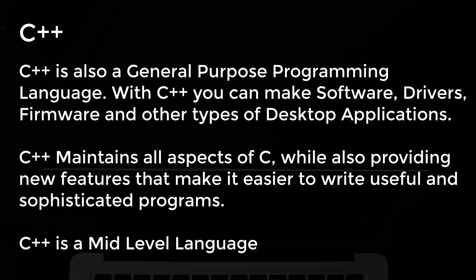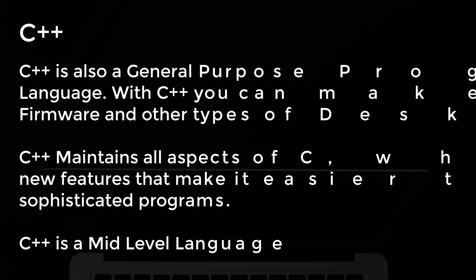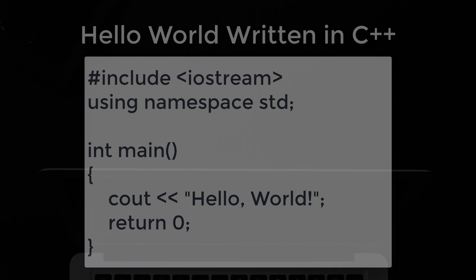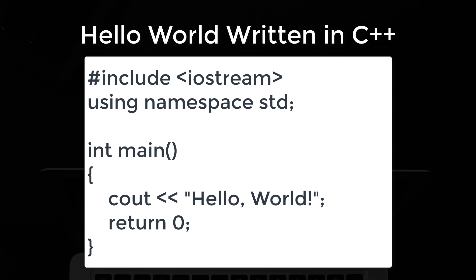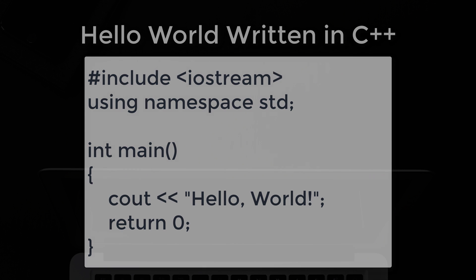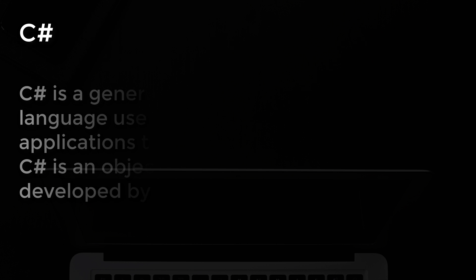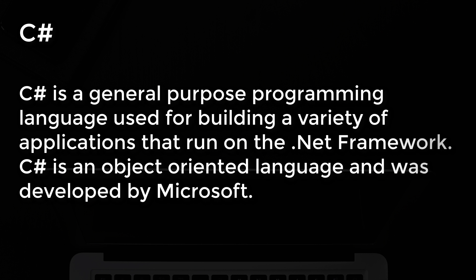Number 6: C++. C++ is also a general-purpose programming language. With C++ you can make software drivers, firmware, and other types of desktop applications. C++ maintains all aspects of C while also providing new features that make it easier to write useful and sophisticated programs. Here is hello world written in C++.